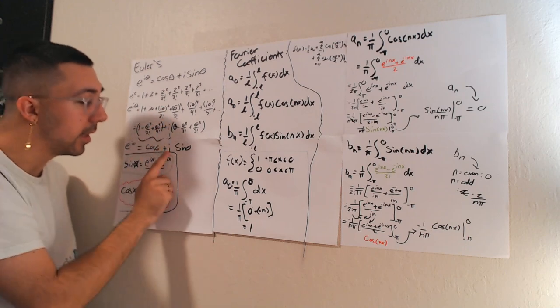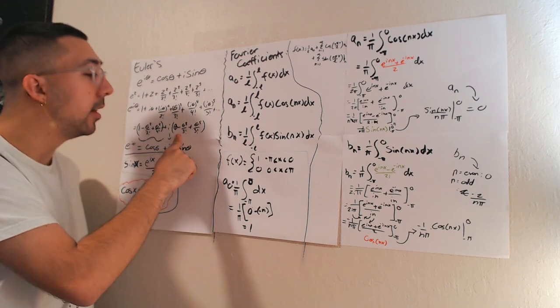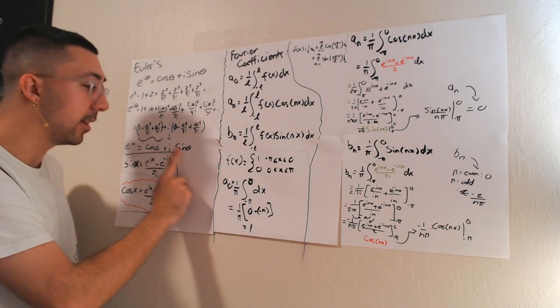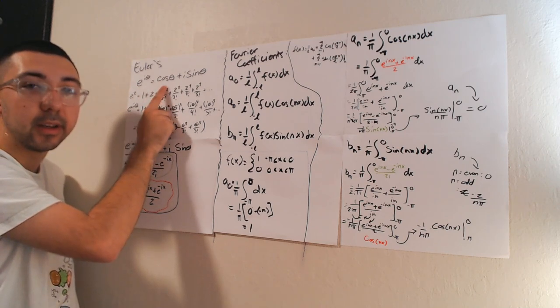We're going to take all the i's out of the ones that do have it, put the i on the outside, and then we're going to note that all of the ones that do not have an i anymore look like the series expansion for sine theta. So that's how we get e to the i theta equals cosine theta plus i sine theta.